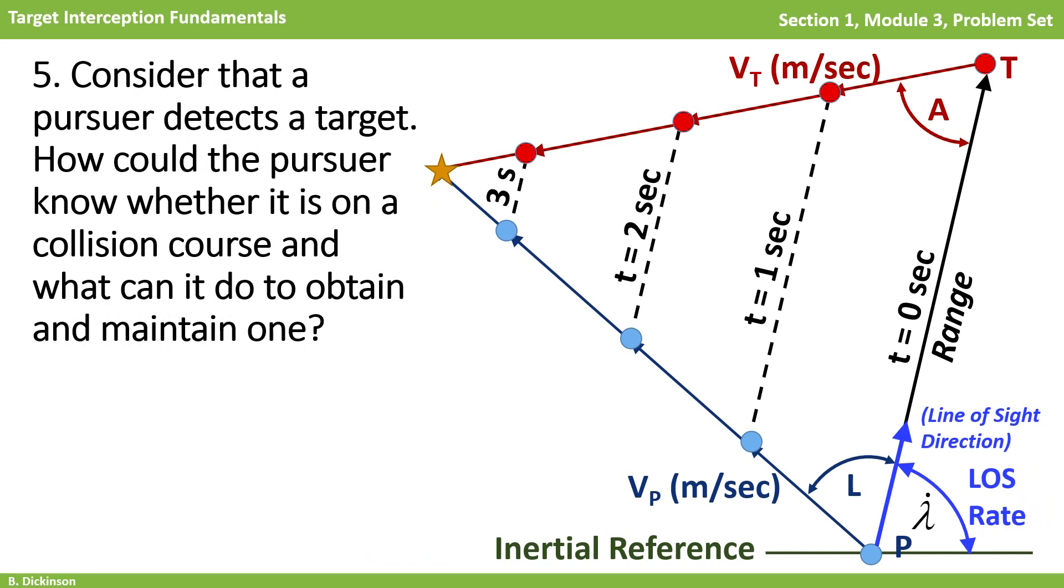Now consider that a pursuer detects a target. How could the pursuer know whether it is on a collision course, and what can it do to obtain and maintain one? Assuming the time rate of change of the range is decreasing, a pursuer knows it's on a collision course if the line of sight direction does not change, or that the line of sight rate is zero. Therefore, to detect, it needs to quantify line of sight rate.